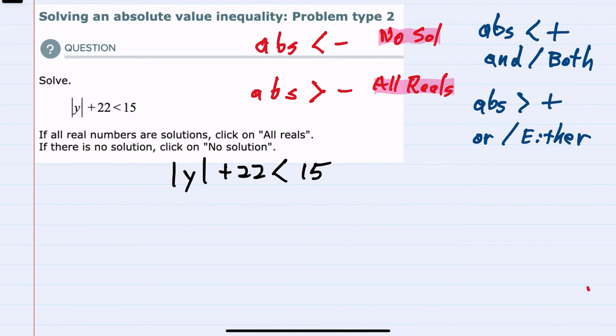For this example, we have the absolute value of y plus 22 is less than 15. To start solving, we would want to get the absolute value by itself, by subtracting the 22 over to the other side.